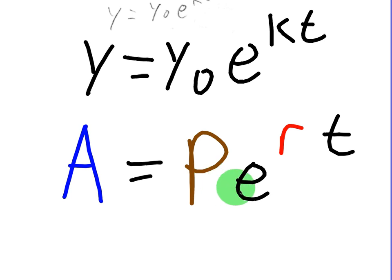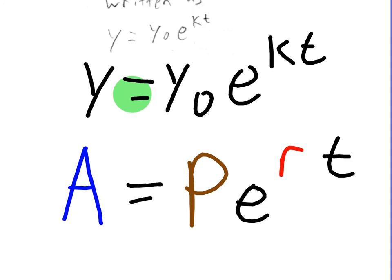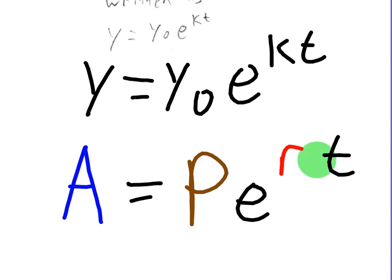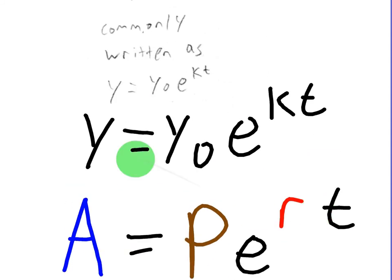So A equals Pe^(rt) is the same as the formula that we just derived. So we've actually just proven also the formula for compound interest, as well as exponential growth.